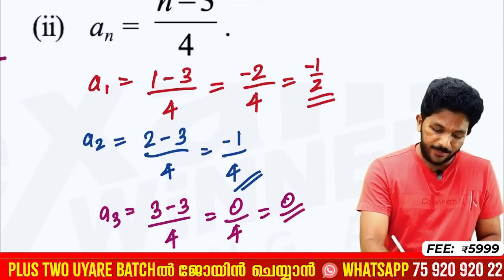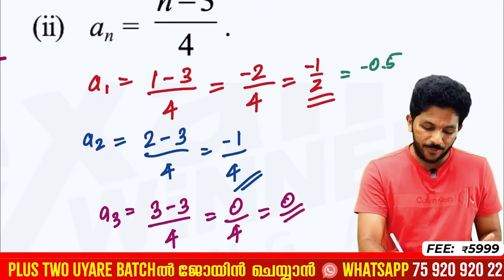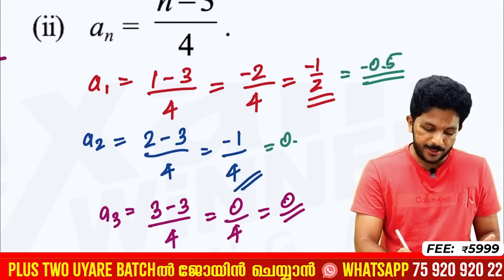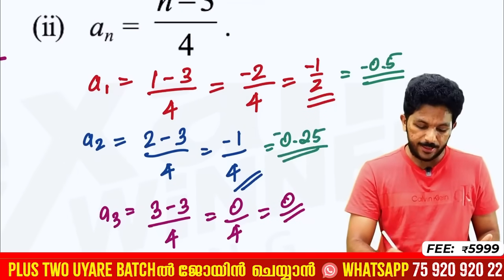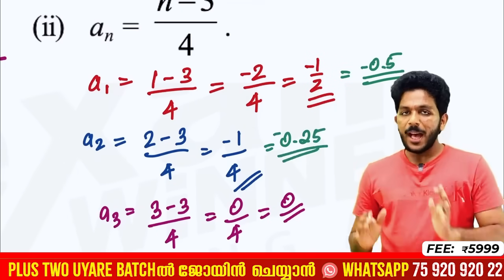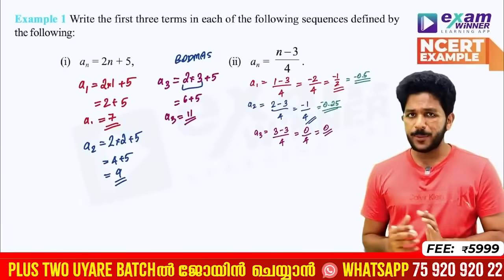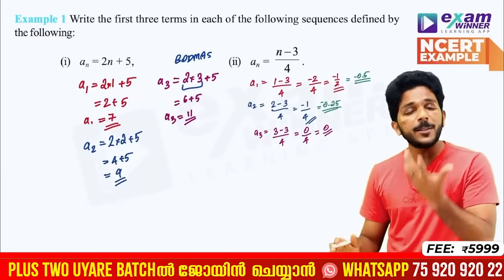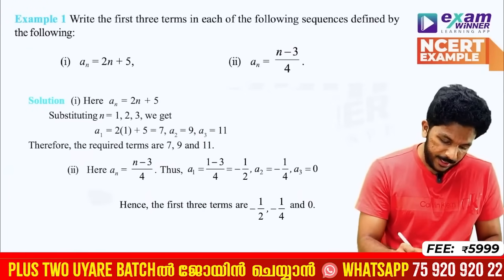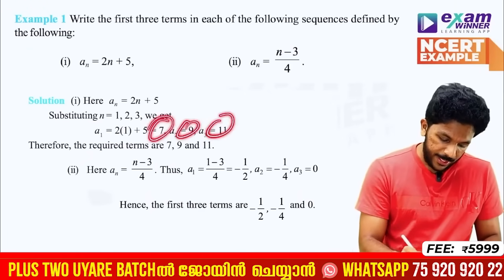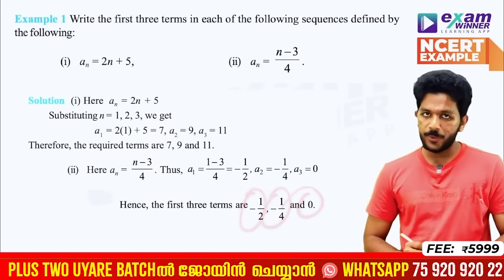In decimal form: minus 1 by 2 is minus 0.5, minus 1 by 4 is minus 0.25, and the third term is 0. So the answers in the textbook are: 7, 9, 11 for the first sequence, and minus 1 by 2, minus 1 by 4, and 0 for the second sequence.